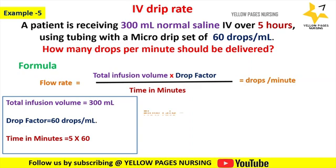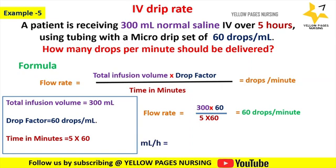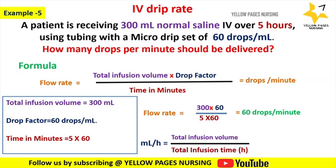Applying the formula, we get: 300 multiplied by 60, divided by 5 multiplied by 60, which gives 60 drops per minute. To calculate ml per hour, the formula is total infusion volume divided by total infusion time — that is 300 divided by 5, which gives 60 ml per hour.